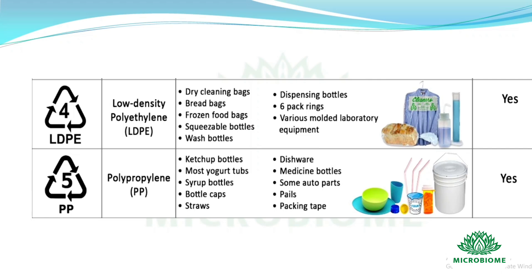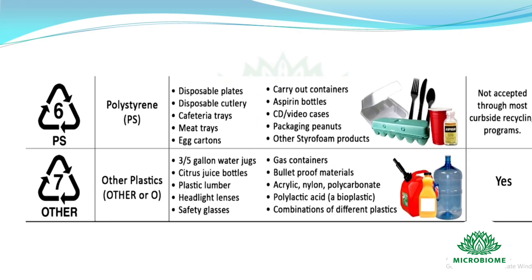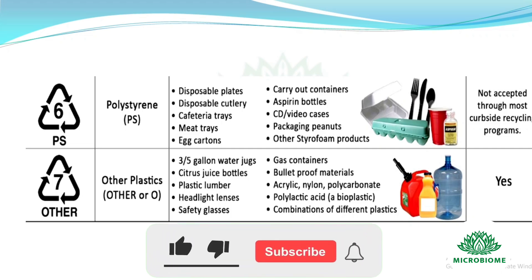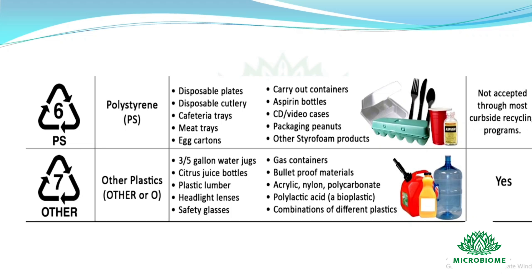Code 5: Polypropylene, used for ketchup bottles, most yogurt tubs, syrup bottles, bottle caps, straws, dishware, medicine bottles, some auto parts, pails, and packing tape. Code 6: Polystyrene, used for disposable plates, disposable cutlery, cafeteria trays, meat trays, egg cartons, carry-out containers, aspirin bottles, CD and video cases, packaging peanuts, and other styrofoam products.